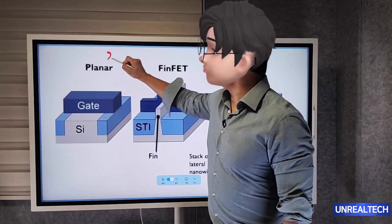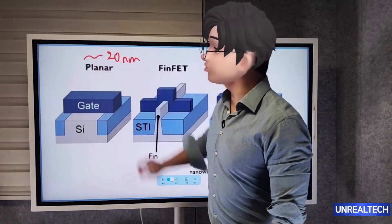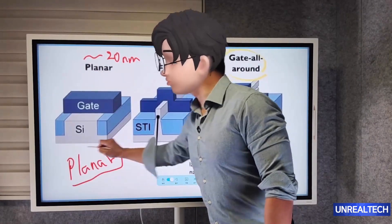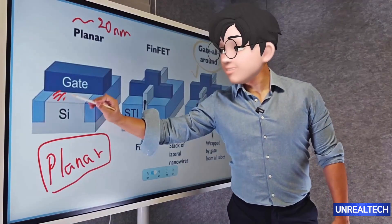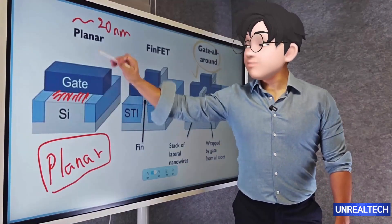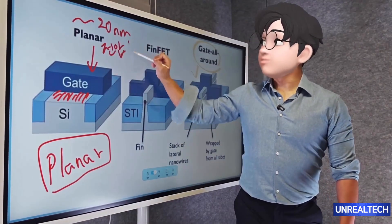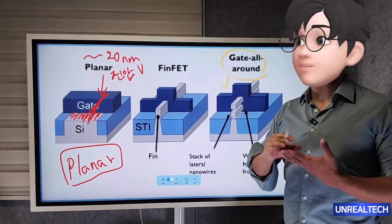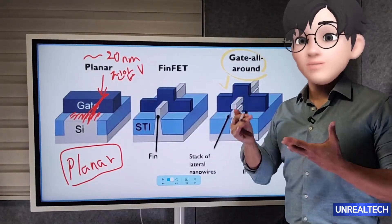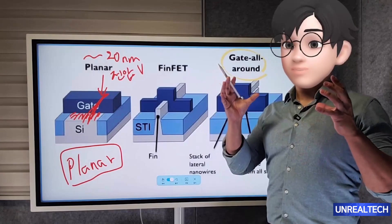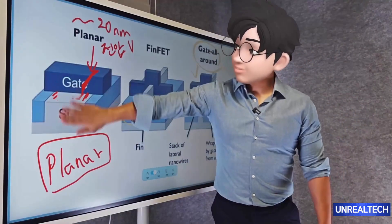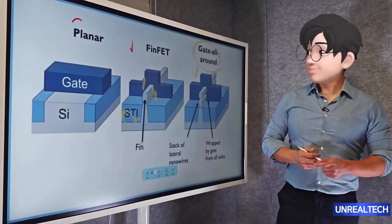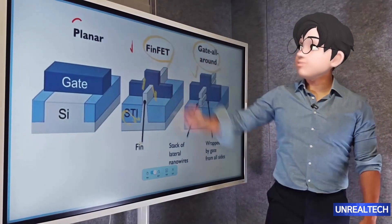In the early days, until we reached around the 20 nanometer mark, we utilized what is referred to as the planar structure. Depending on the amount of voltage applied to the gate, the resulting current is determined. This transistor is digitized to act like a switch, showing 0 or 1. As it was gradually reduced, the flow of electricity was not as smooth as expected, which led to the development of the FinFET concept.